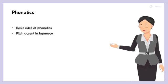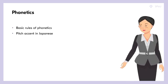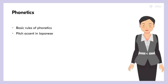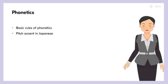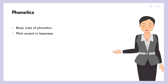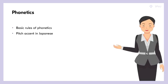The previous unit was dedicated to pronouncing separate sounds and syllables. Besides, we have already introduced a number of rules concerning co-occurrence of sounds. In this unit, we will continue to talk about the rules of reading and discuss whether there is a stress in Japanese and what it is.